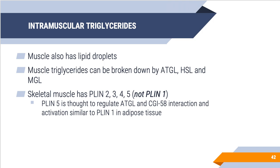Intramuscular triglyceride stores can also be broken down via ATGL, hormone-sensitive lipase, and monoglyceride lipase — the same enzymes present in adipose tissue. The difference is in the types of perilipin present in skeletal muscle: perilipin 2, 3, 4, and 5, whereas adipose tissue has perilipin 1. Perilipin 5 in skeletal muscle is thought to regulate ATGL and the CGI-58 interaction, similar to perilipin 1 in adipose tissue.